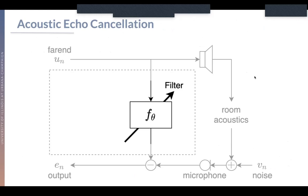Moving to the particular task we're going to demo AutoDSP on: acoustic echo cancellation. In acoustic echo cancellation, we're interested in taking a speaker and a microphone in a room and removing any of the effects of the speaker from that microphone. Typically, that speaker is called the far end, and what's recorded at the microphone is called the near end. We're interested in removing the far end echo from the near end. This is usually done with some sort of optimization scheme that fits a filter to mimic that transfer function across time.